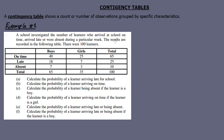The results are recorded in the following table. There were 100 learners in total. When working with a contingency table, the first thing is to check the table and make sure we understand it.